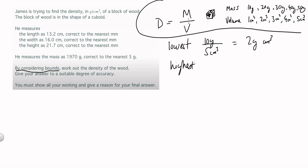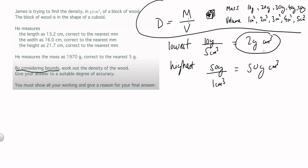Now I'm looking for the highest possible value. To do that you need to pick the highest value for the mass, which is 50 grams, and the lowest possible value for the volume, which is 1 centimetre cubed. Obviously 50 divided by 1 is 50 grams per centimetre cubed. These are the worst case scenarios — 2 is the lowest and 50 is the highest, because I wasn't certain of the exact mass or volume.